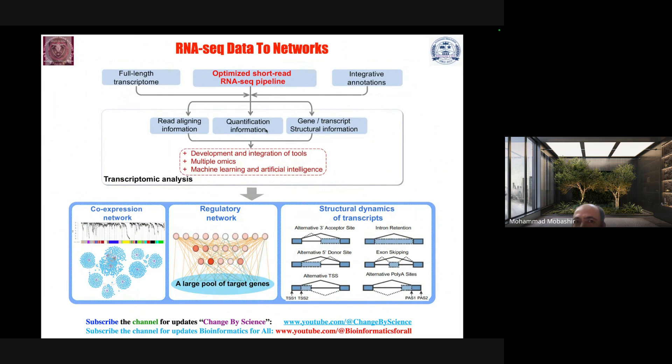Think about another workflow: RNA-seq data to networks. If someone is interested deeply in RNA-seq data to network level analysis, what do they need to think about? Full-length and trans - this is also a kind of visualization. You need to think how I'm going to present the workflow. For example, full-length transcript from optimized short read RNA-seq pipeline, integrative annotation, read aligning information using SAM tools or something more, quantification information, gene transcript structural information.